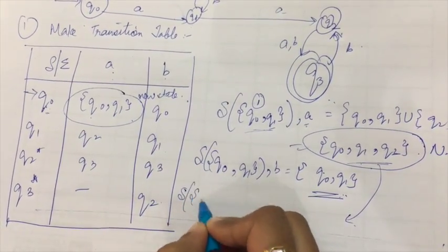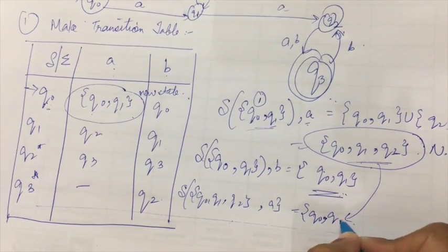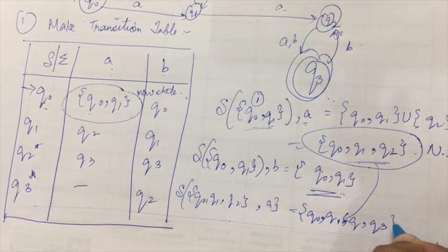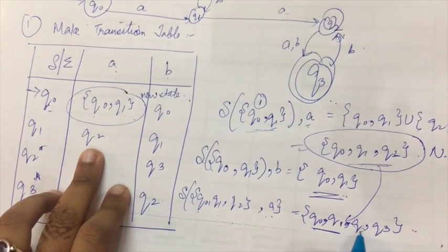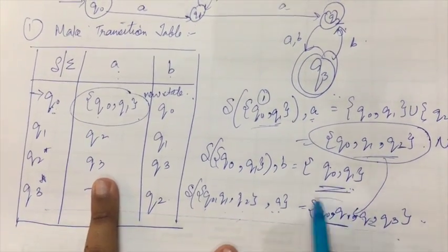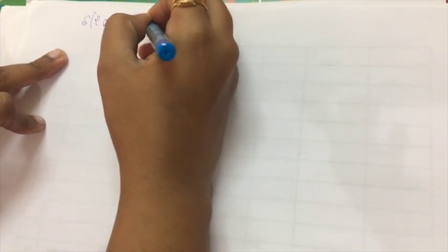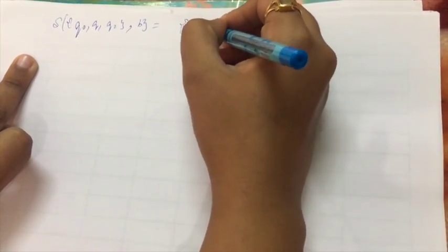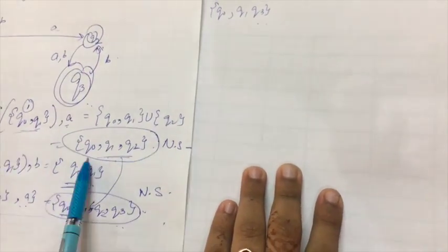Now we check transitions for the third new state {Q0, Q1, Q2} with A. That gives us: Q0 with A = {Q0, Q1}, union Q1 with A = Q2, union Q2 with A = Q3 — resulting in {Q0, Q1, Q2, Q3}. This is another new state. The transition of {Q0, Q1, Q2} with B gives {Q0, Q1, Q3}, which is also a new state.